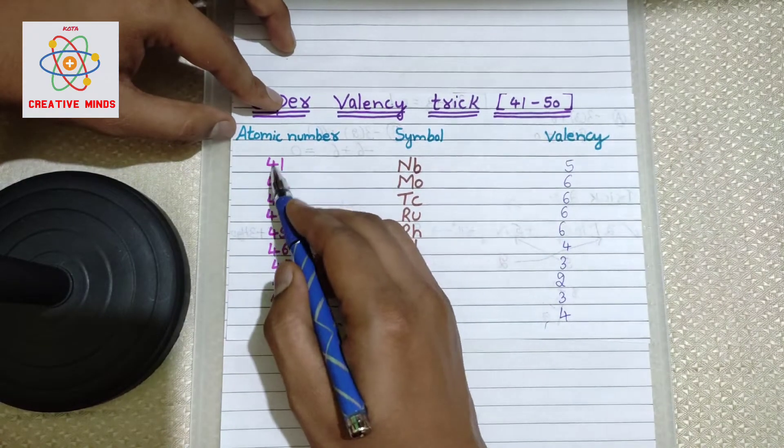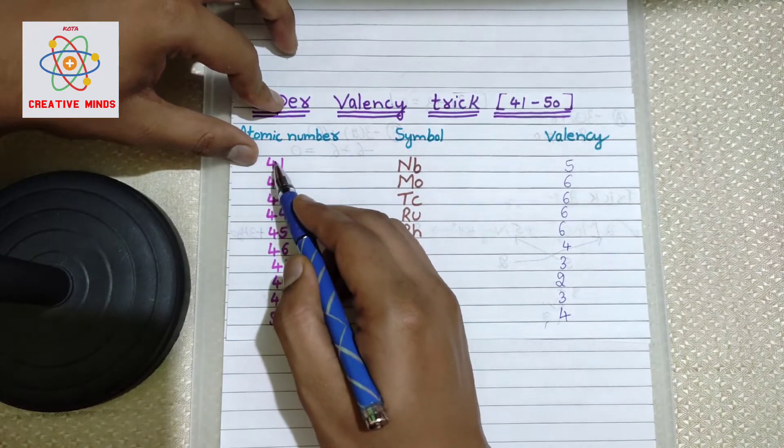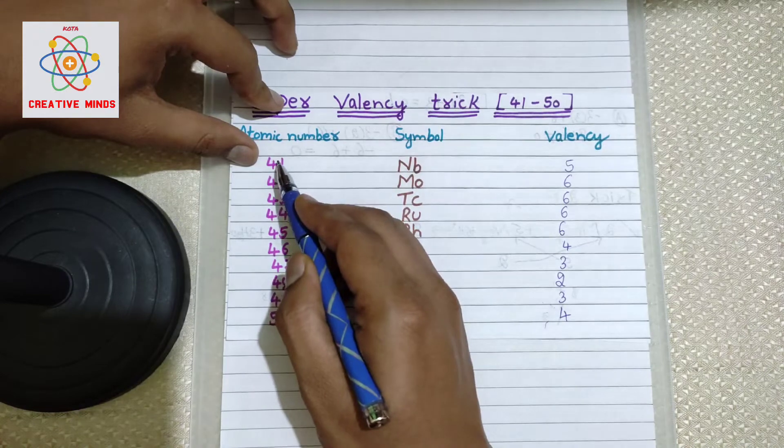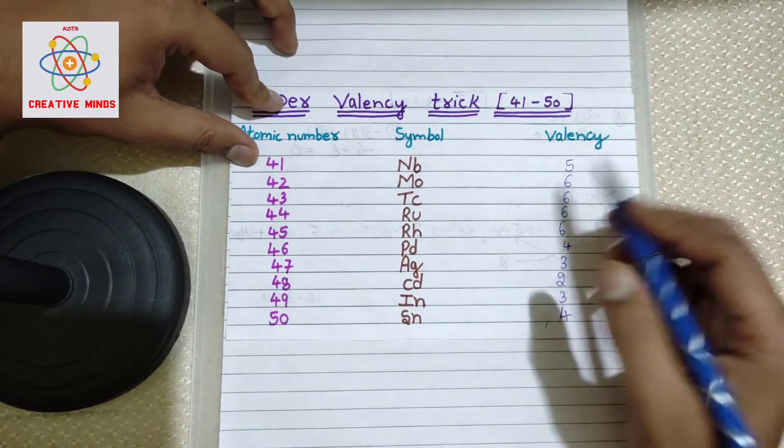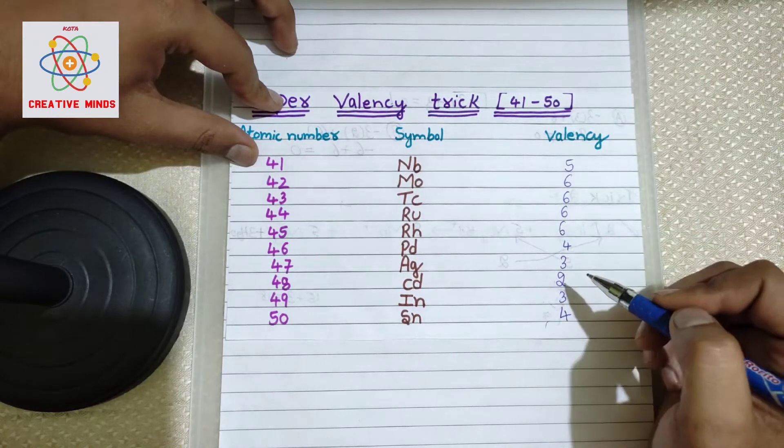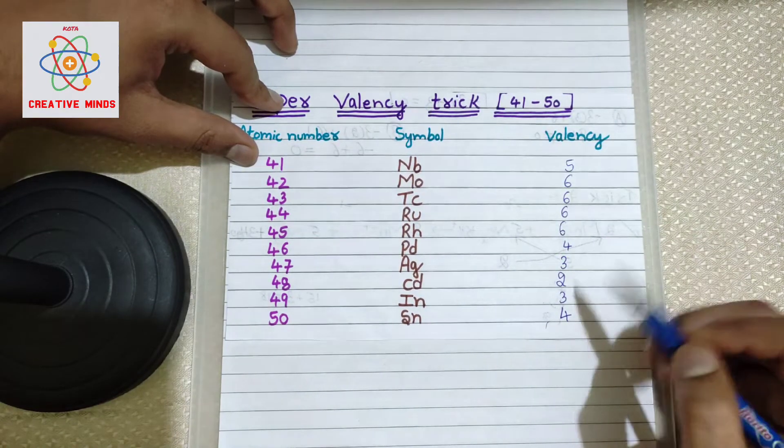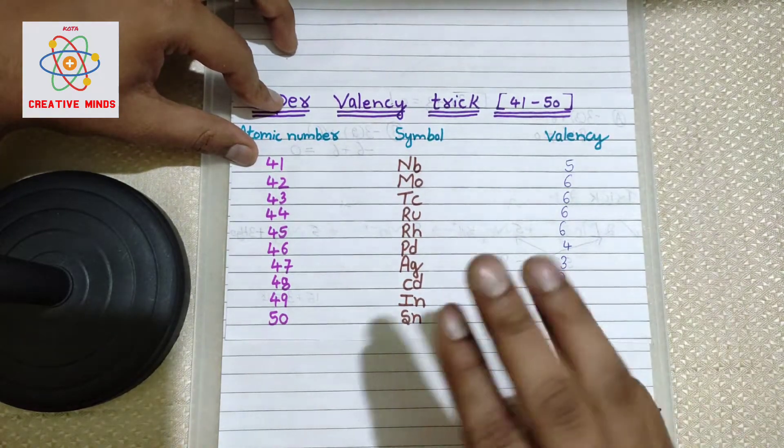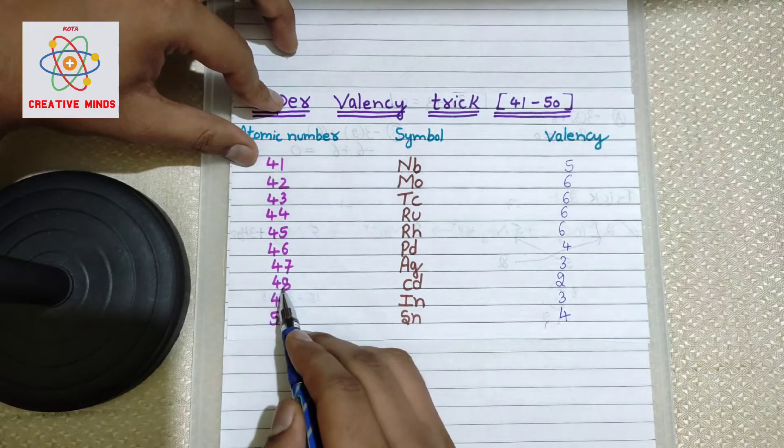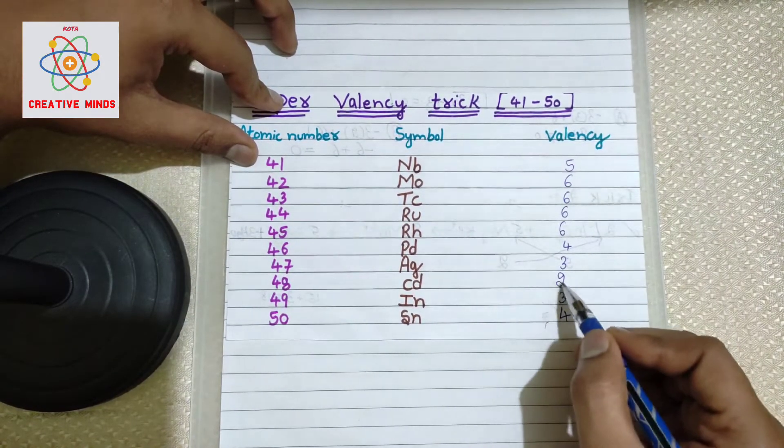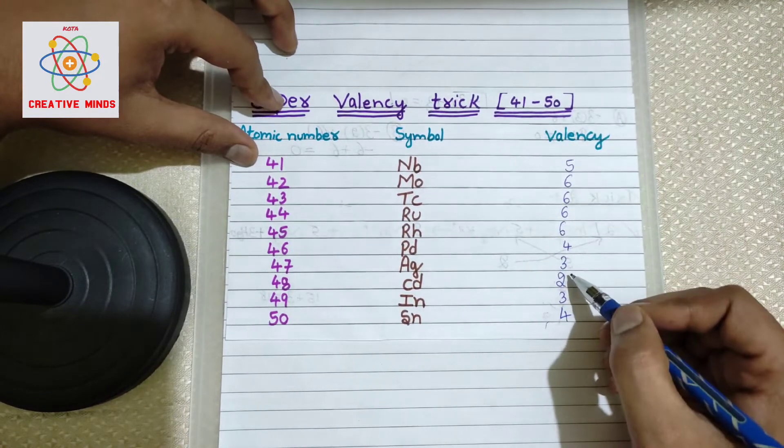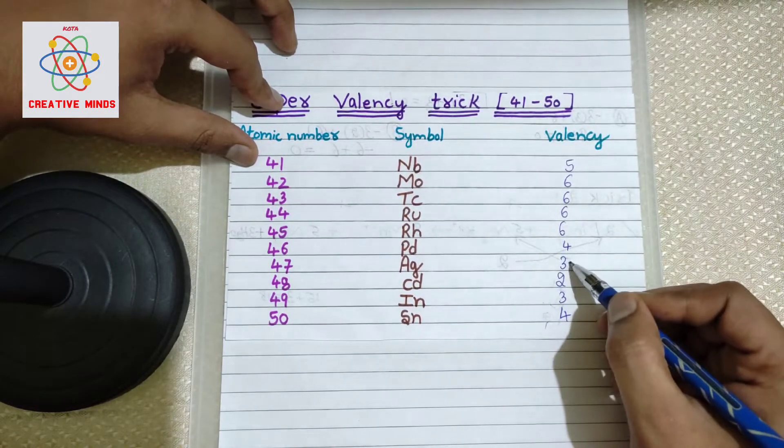We are starting with atomic number 41, so just focus on the number four. If we add one to four, what will be your answer? Five. Therefore, next four elements valency will be same: six, six, six, six. Next, in the remaining five elements, find out the middle one. Middle one will be third element, which is 48. For 48, write 2 as its valency. Then just keep on adding one: two plus one, three, three plus one, four, then again three and four. Very simple.